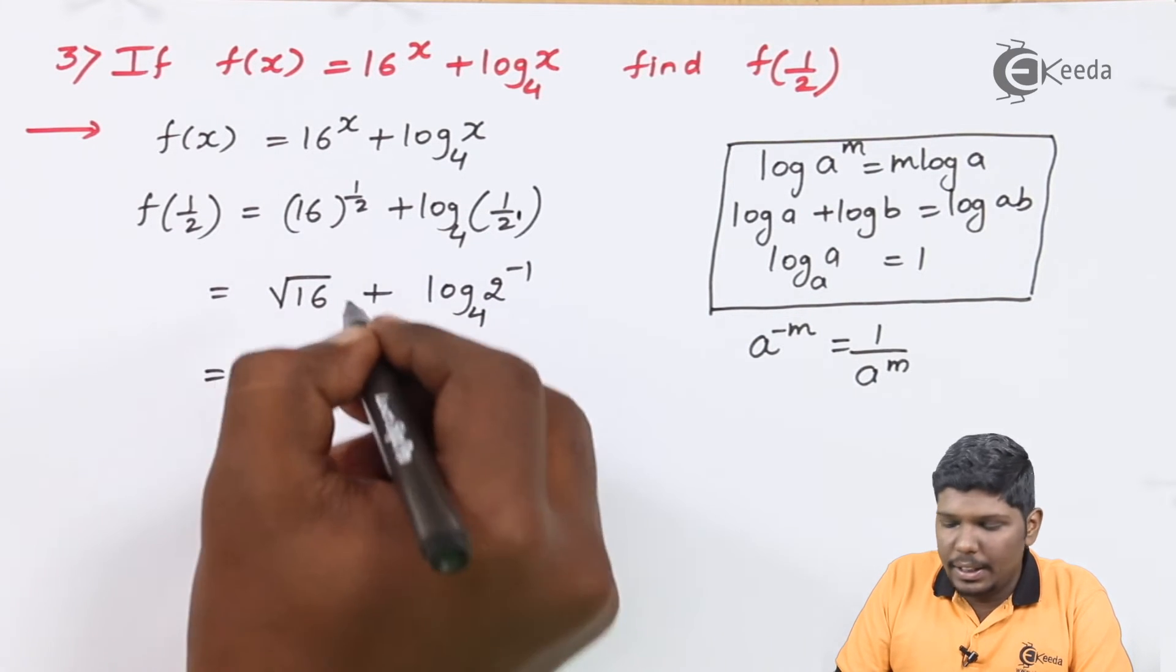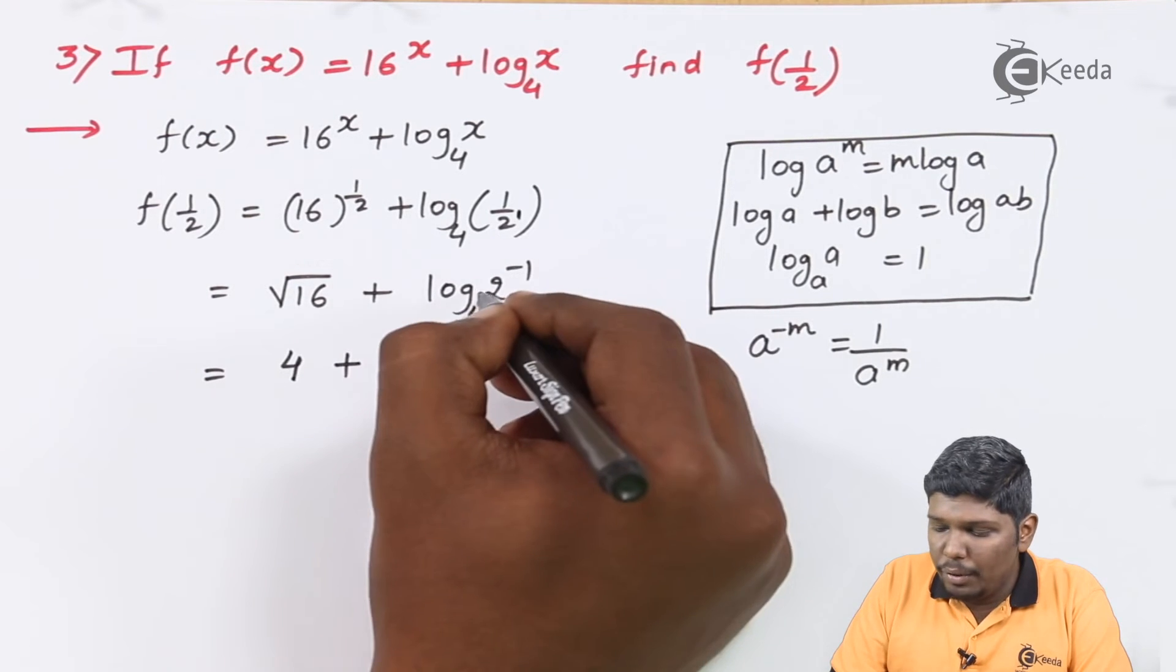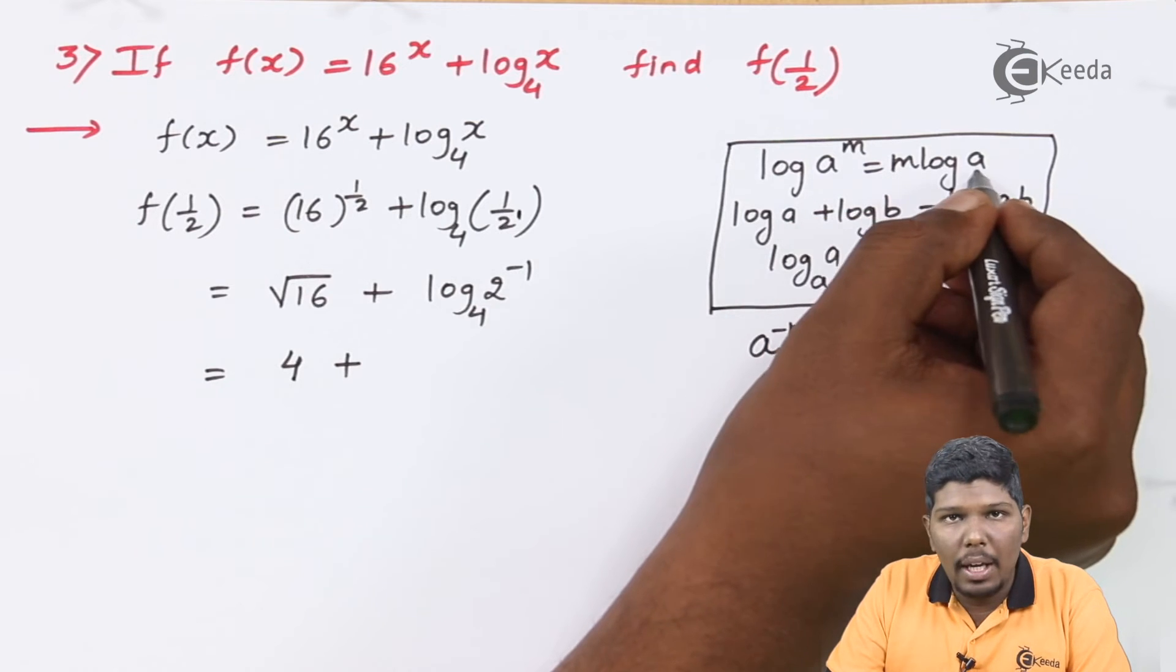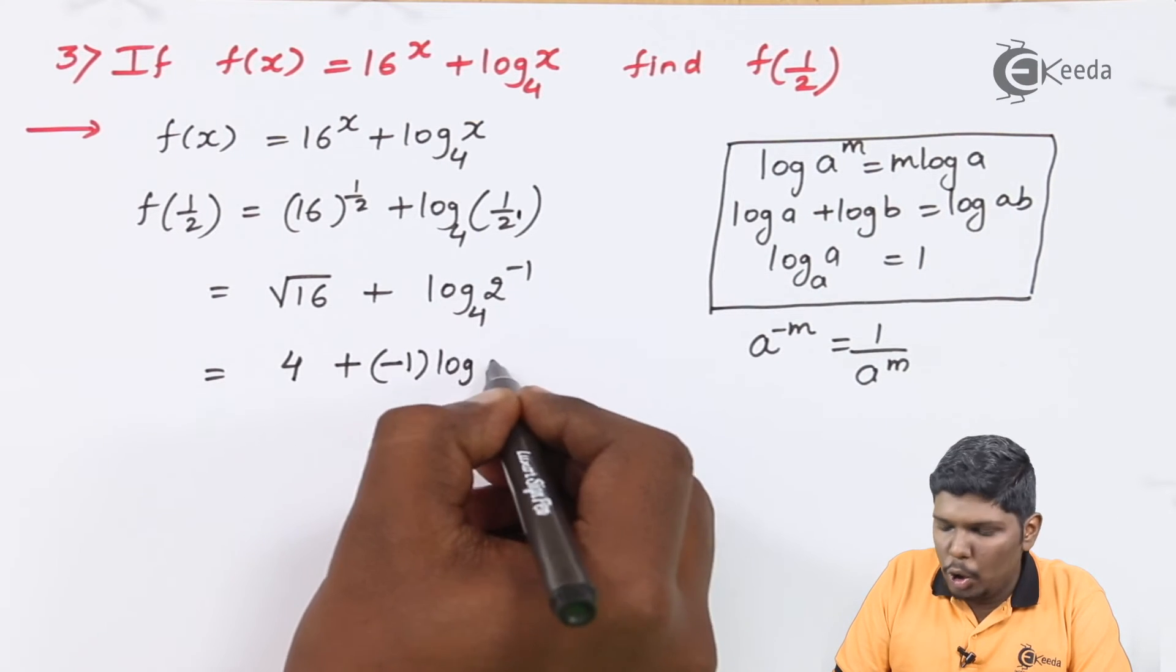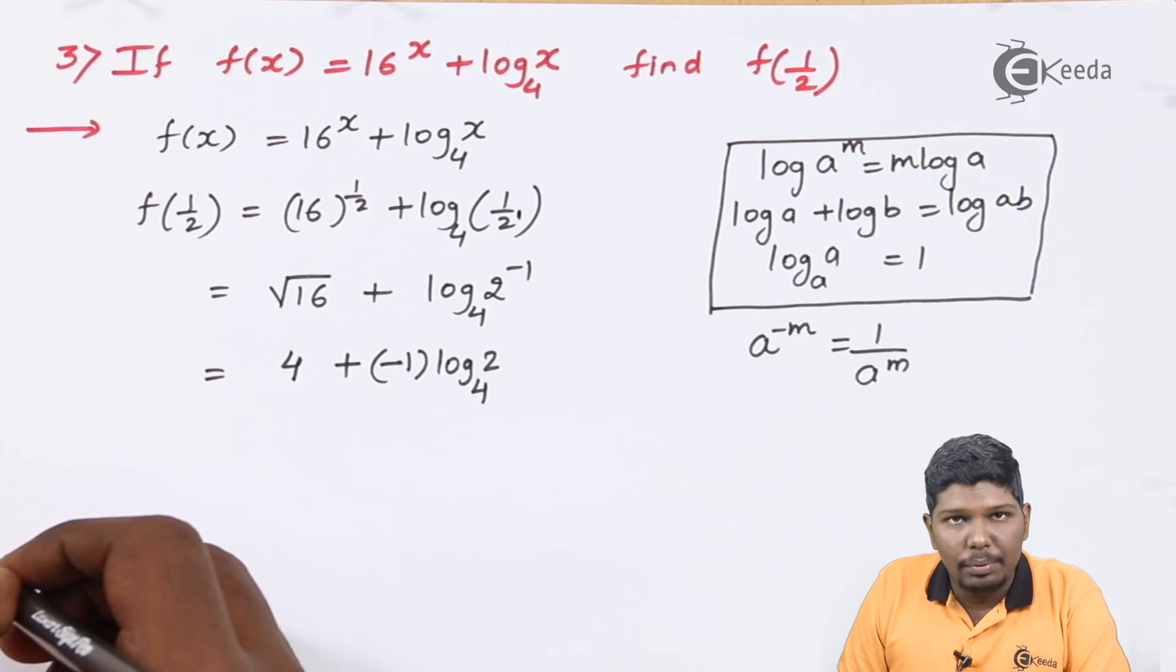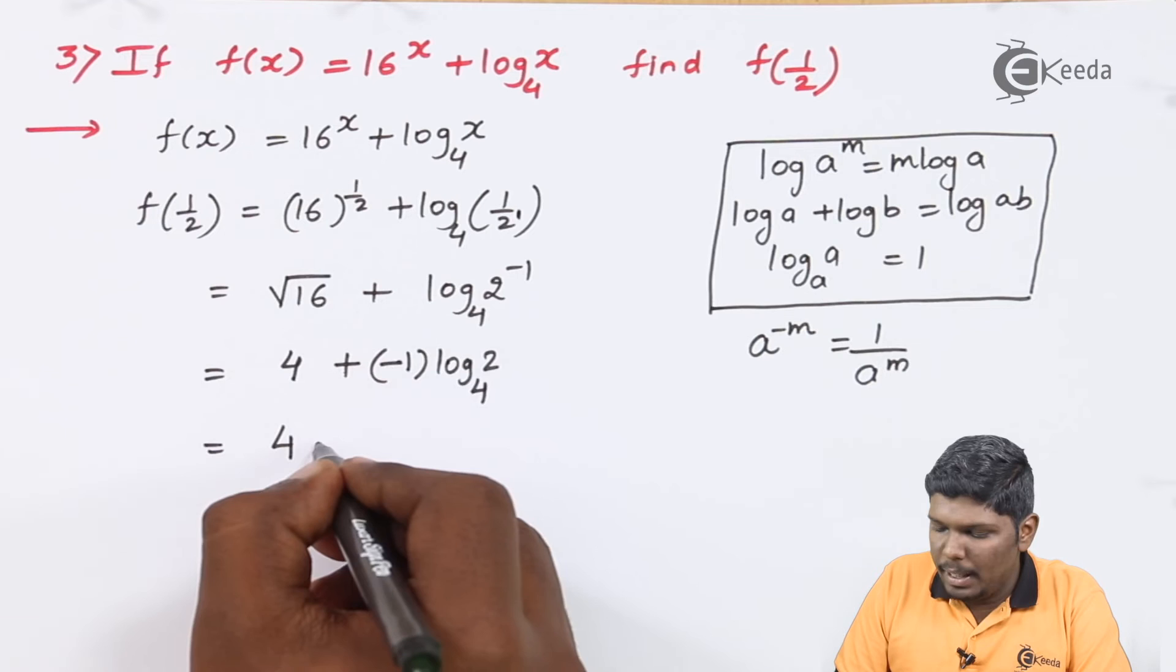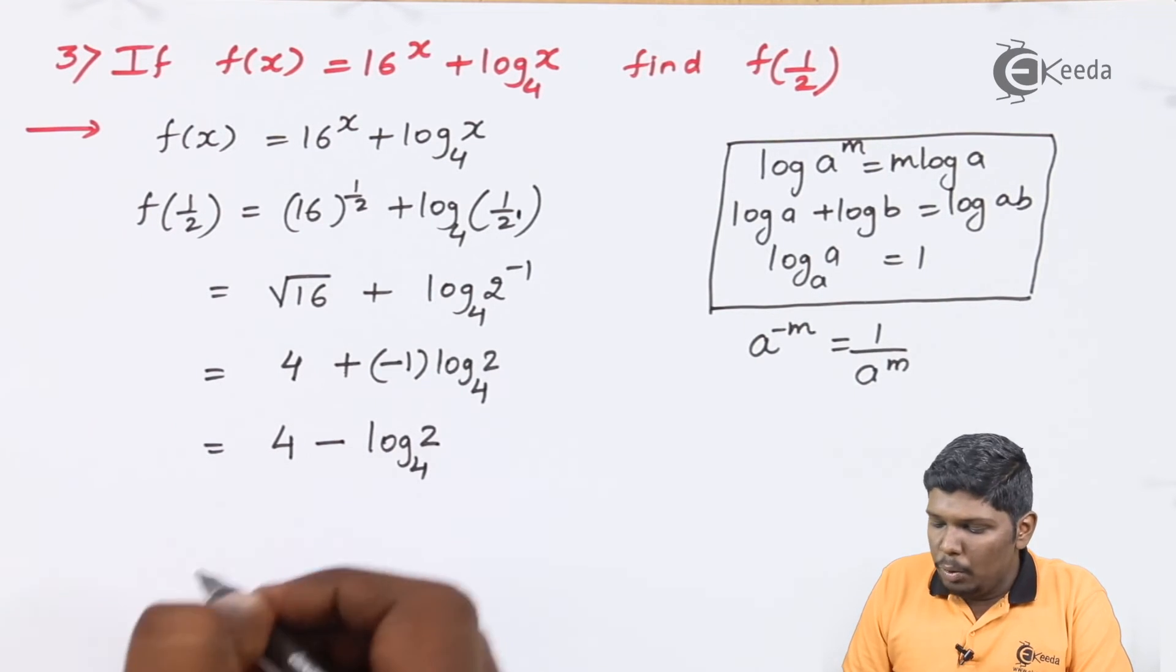Next, square root of 16 is 4, plus here we can use the formula that log a raised to m is m log a. So this becomes minus 1 times log 2 to the base 4. This is 4, and minus 1 times becomes minus, so this becomes log 2 to the base 4.